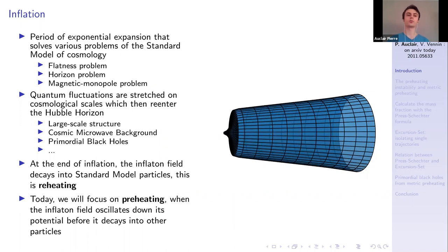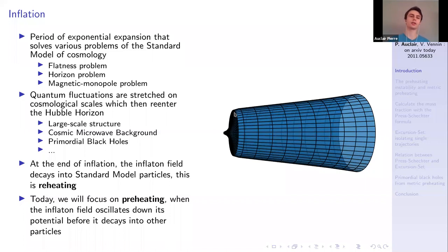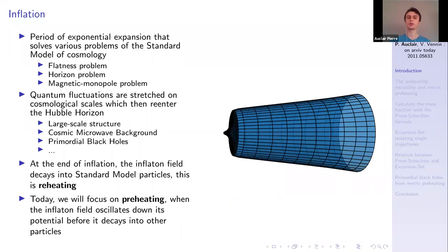At the basics of all of this is inflation — a period of exponential expansion that solves various problems of the standard model of cosmology, such as the flatness problem, the horizon problem, and the magnetic monopole problem. It has been well tested through CMB experiments. During this rapid expansion, quantum fluctuations are stretched to cosmological and even super-horizon scales, and later re-enter the horizon. These fluctuations have implications for large-scale structures, are seen in the CMB, and when they re-enter the horizon and collapse, they can lead to the production of primordial black holes.